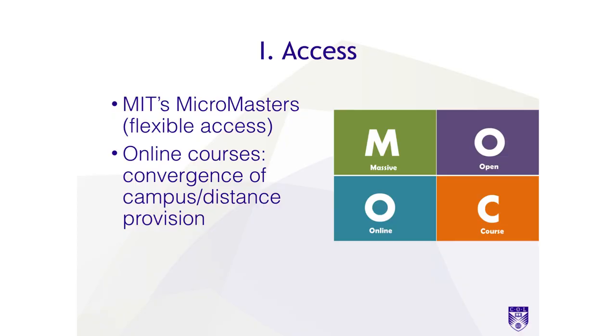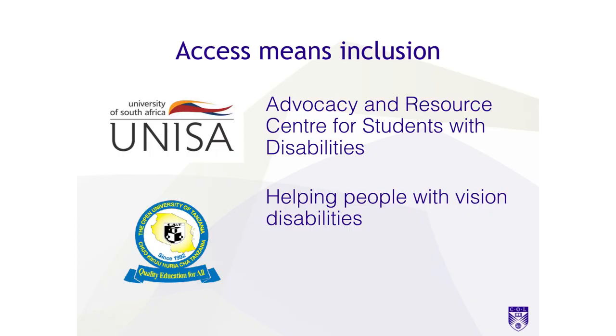First, the issue of access. Today, even campus universities like MIT in the US have opened their doors to anyone anywhere in the world through massive open online courses — MOOCs — and micro-credentials. 33% of students in the US take at least one online course, which indicates a convergence of campus and distance learning provision. COL is working with universities in Malawi, Namibia, Nigeria, Eswatini, Uganda, and Zambia to support the integration of open, distance, and online learning for increased access.